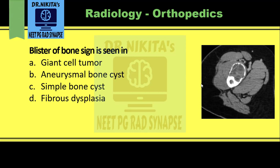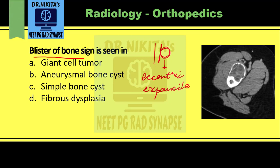Our question asks: blister of bone sign is seen in which condition? Suppose you don't know the answer — how do you approach it? As the term says, like a blister on the skin that balloons out, blister of bone means the bone has a blister-like projection coming out. Basically, it tells you it is an eccentric and expansile lesion.